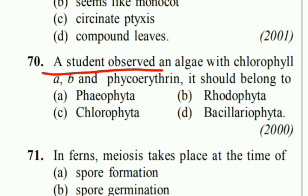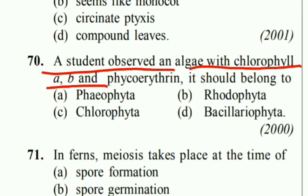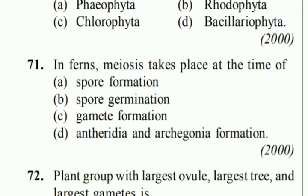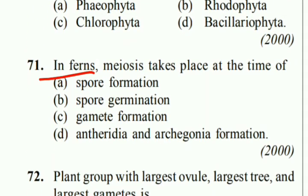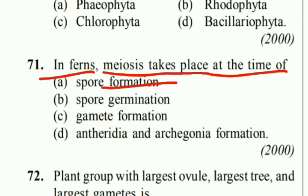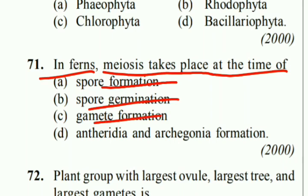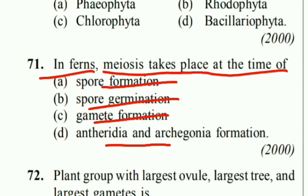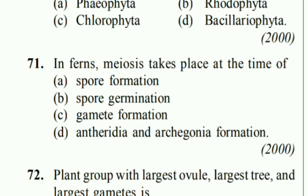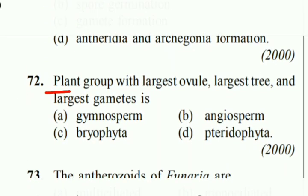A student observed an alga with chlorophyll a, b and phycoerythrin — it belongs to Rhodophyta. In ferns, meiosis takes place at the time of spore formation.